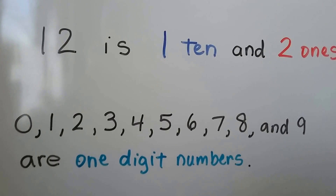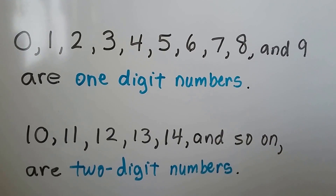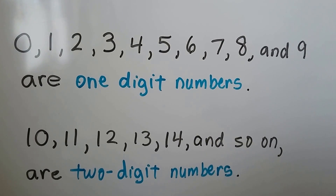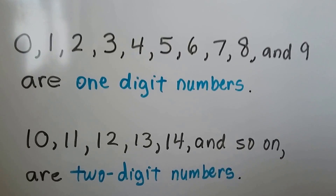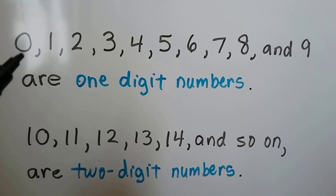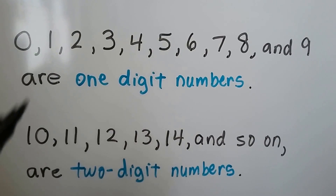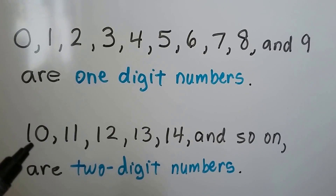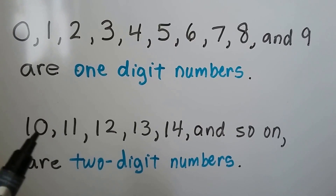There's just one digit to those numbers. 10, 11, 12, 13, 14, and so on as we count bigger are two-digit numbers. These are one-digit numbers — there's only one digit here. These are two-digit numbers — there's a digit and there's a digit, so these are two-digit numbers.